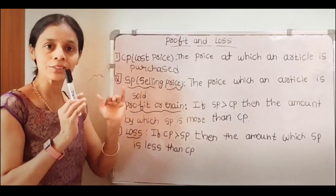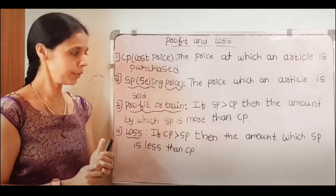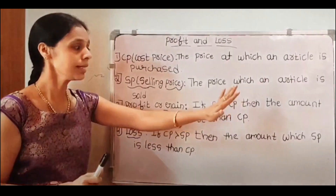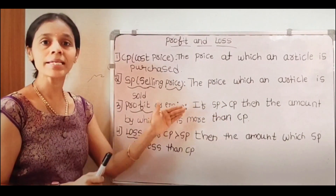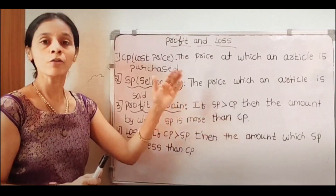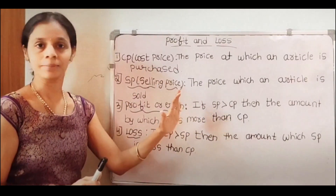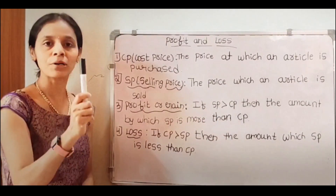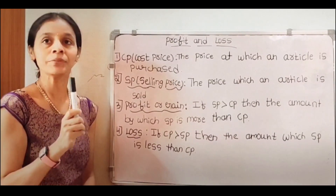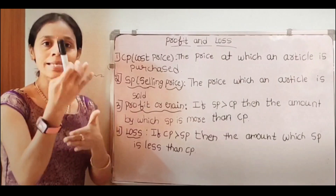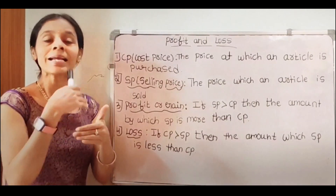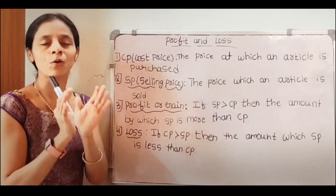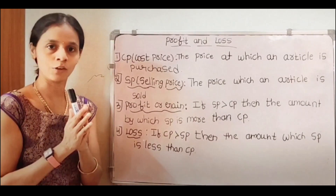Next we consider profit. Profit means: if the selling price is greater than the cost price, then the amount by which SP is greater than CP — this situation we call profit or gain. For example, the cost price of this marker is 10 rupees and it is sold for 15 rupees. In this situation, 5 rupees is the profit. That extra amount of 5 rupees we call profit.